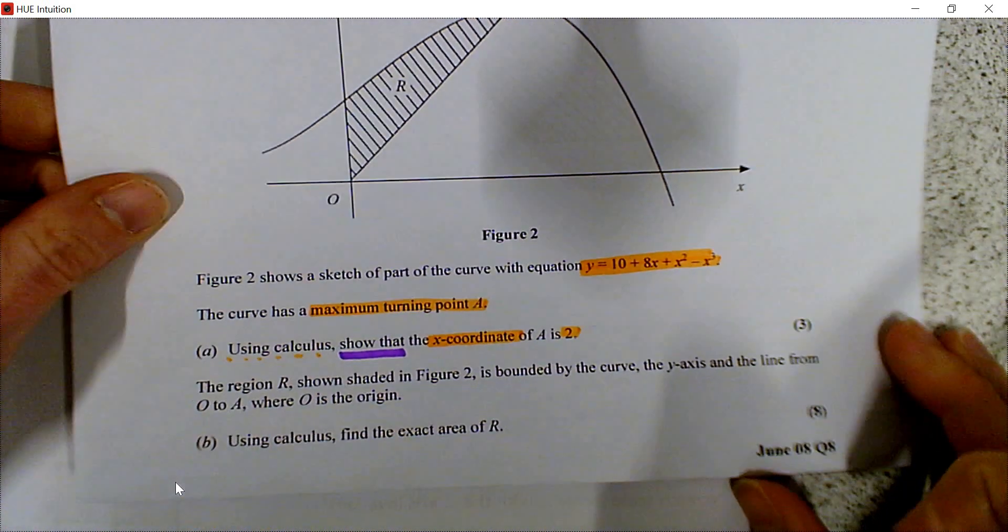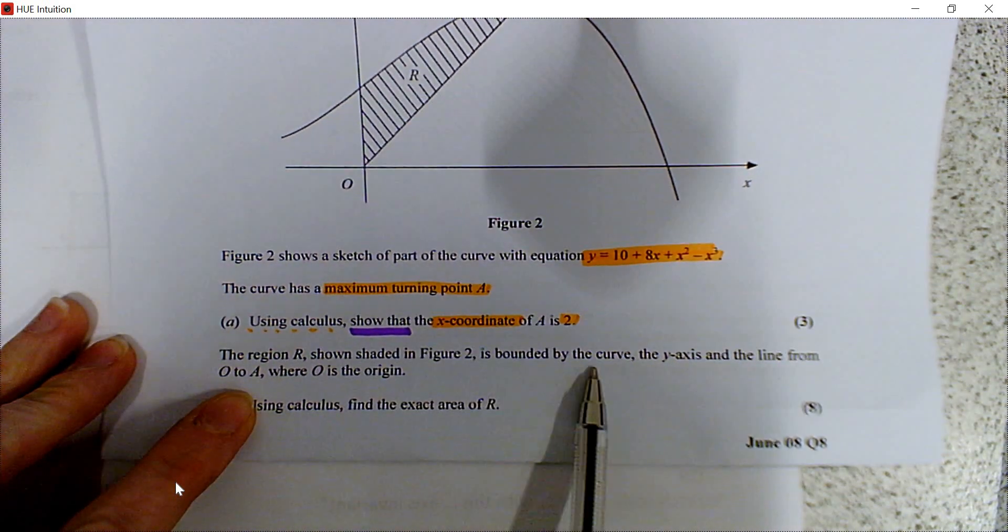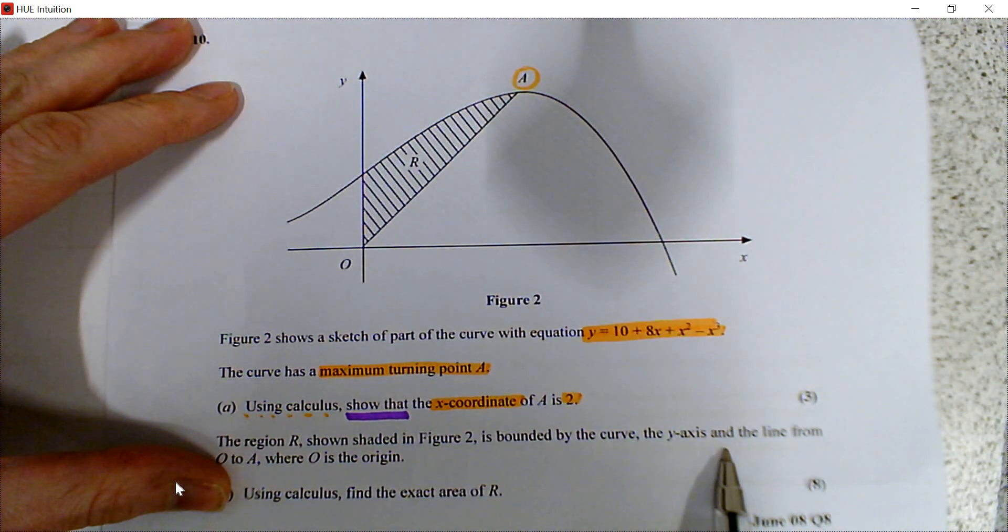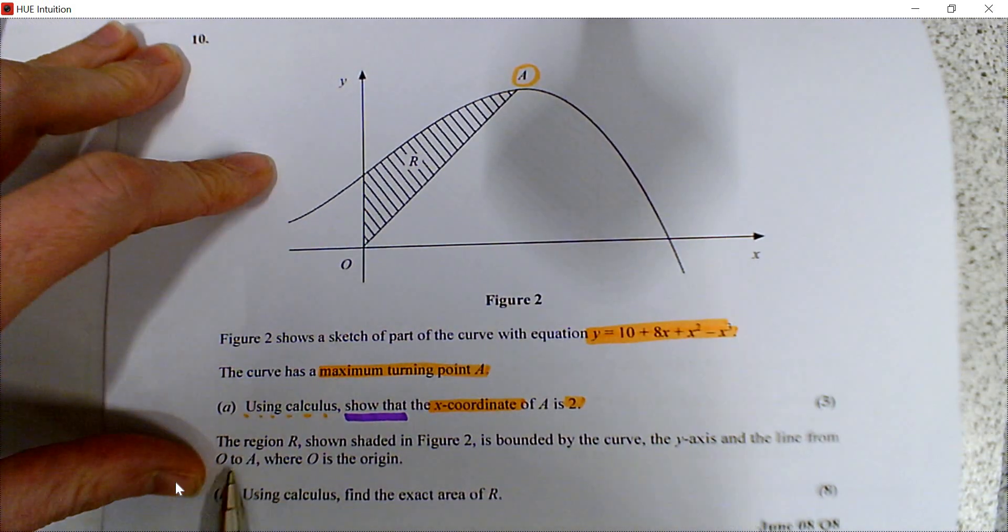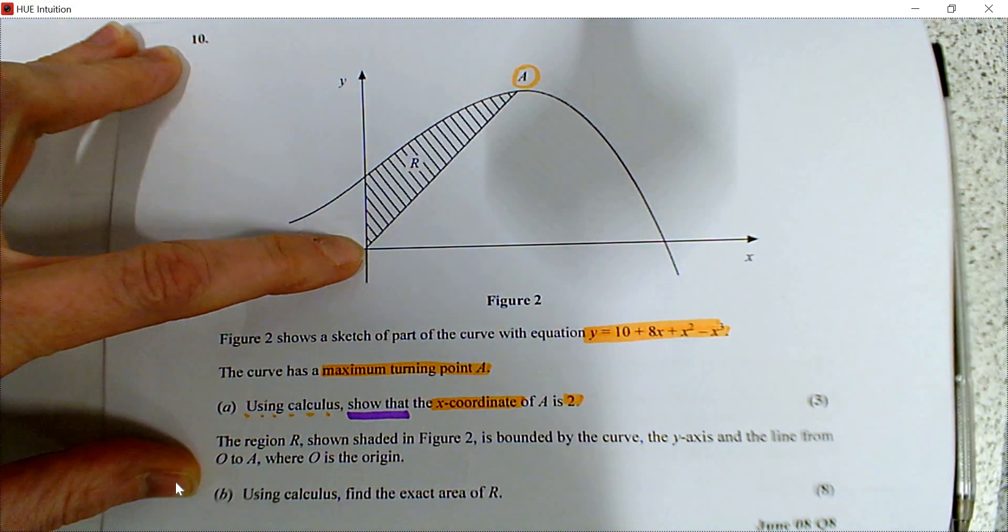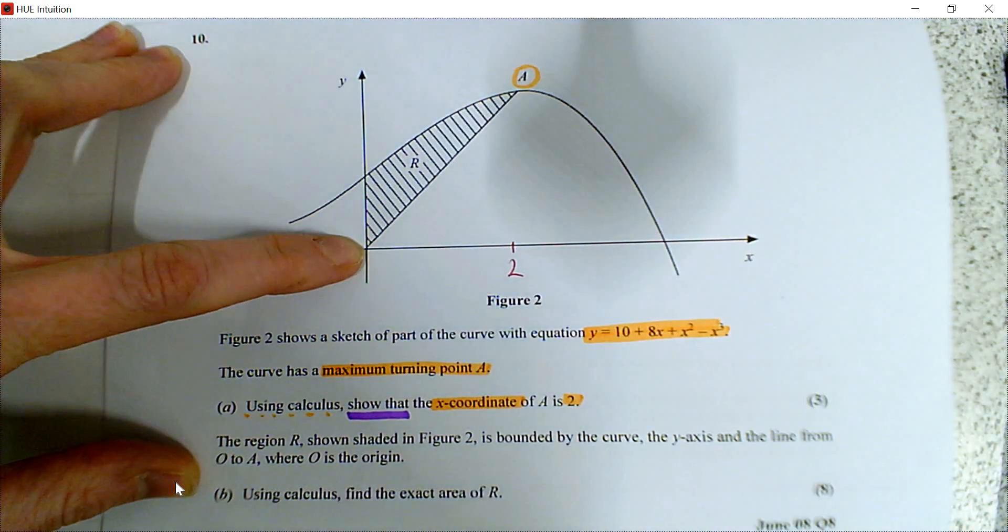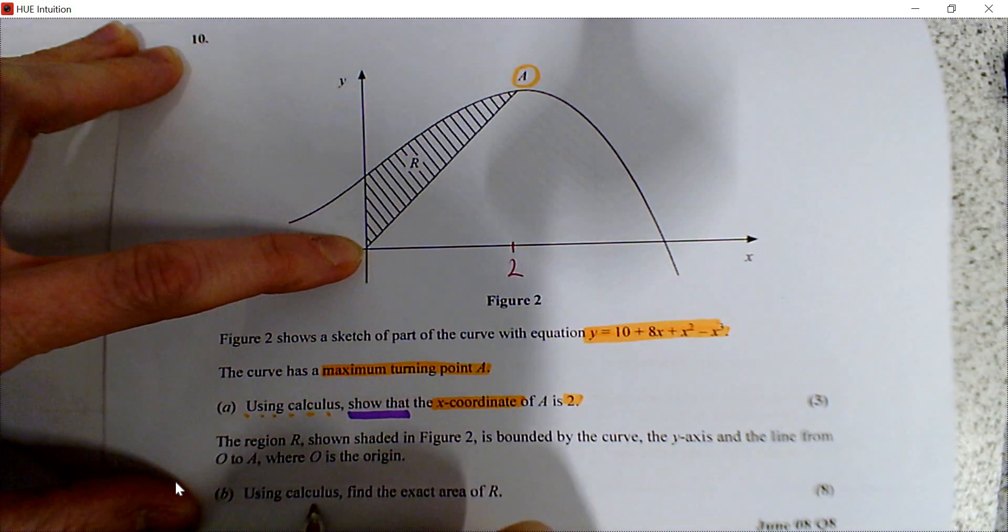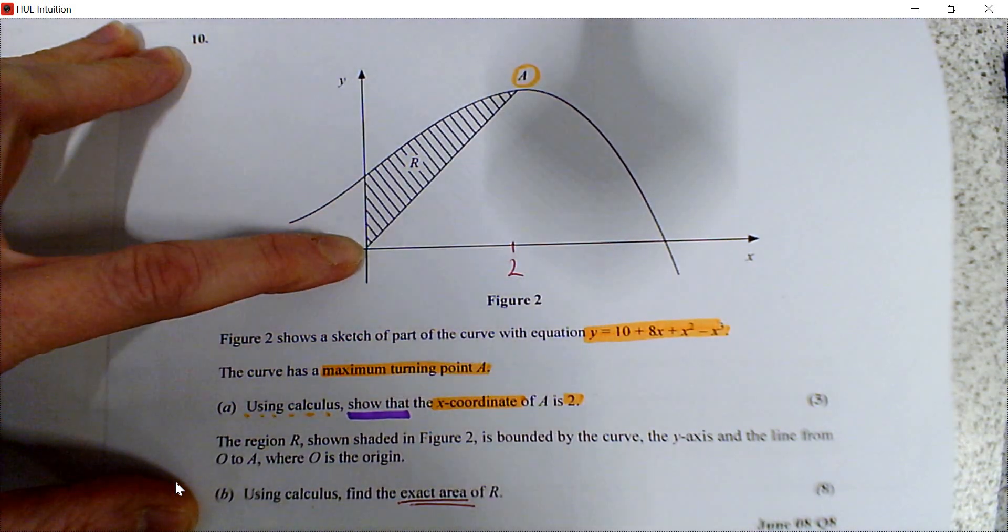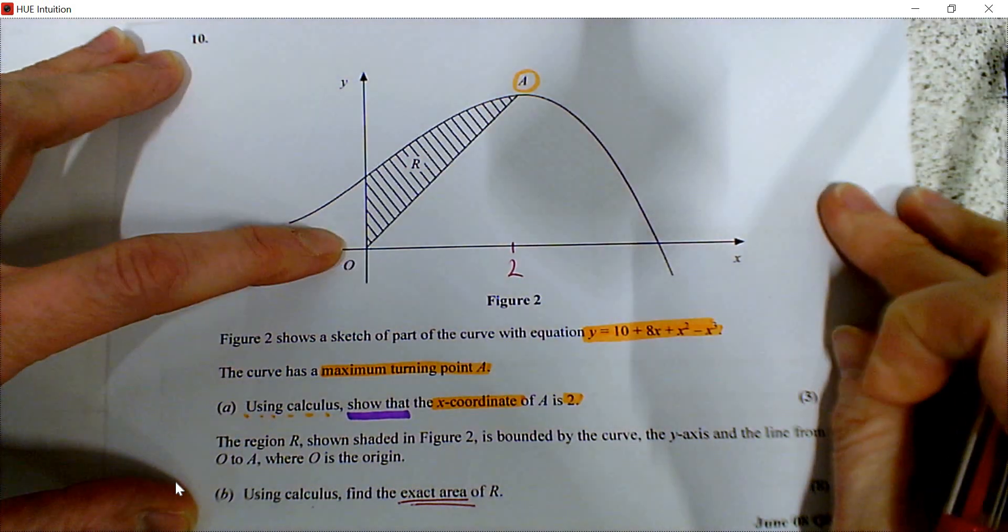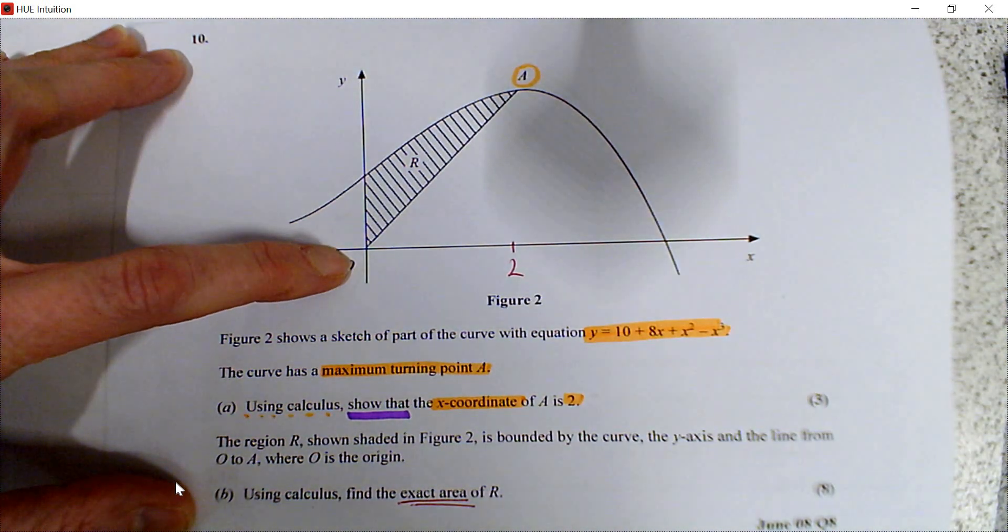Now we can look at the next part of the question. It says the region R is shaded, is bounded by the curve, the y-axis, and the line from O to A, where O is the origin. I'm going to put on the information we've just worked out, so that is 2. It says using calculus, find the exact area of R. When it says exact, we're going to have to not just rely on the decimals on our calculator. We're going to have to do some work by hand.